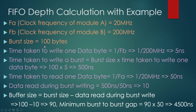The burst size is equal to 100 bytes. From this data, we can calculate the time taken to write one data byte, which equals the time period of clock FB = 1/FB. Since FB = 200 MHz, this becomes 5 nanoseconds — meaning we can write one data byte in 5 nanoseconds. The time taken to write a complete burst equals burst size × time to write one byte = 100 × 5 ns = 500 nanoseconds. So we can write the complete burst in 500 nanoseconds.